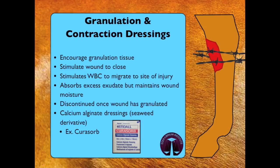The third category of wound dressings promotes granulation and contraction of the wound. By absorbing excess exudate but maintaining wound moisture, this style of dressing stimulates white blood cells to migrate to the site of injury and assist with healing. Examples of this type are calcium alginate dressings, which are seaweed derivatives — CuraSorb is one type. Once the wound has a healthy granulation bed, this type of dressing should no longer be used.